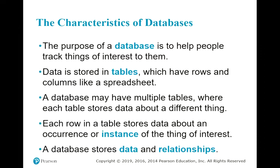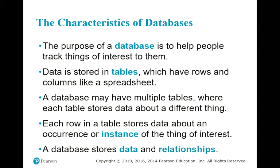On this particular slide, you see five different highlighted words: database, tables, instance, data, and relationships. When you read the definitions, be very critical. For example, bullet item number two says data is stored in tables — but not all data are stored in tables. Everything that can be saved and retrieved is data. Data can be saved on a webpage, a Word document, or a PDF document.